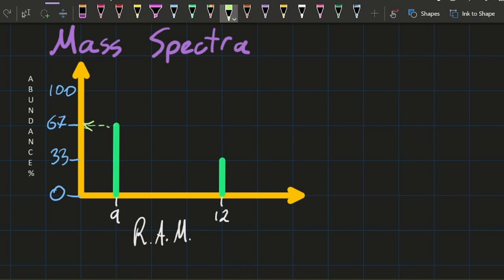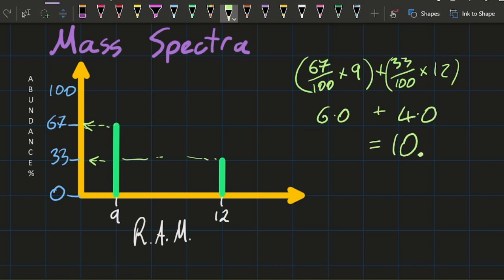So you just saw that two-thirds of them had a mass of 9, 67%, and one-third of them had a mass of 12. Doing the simple SL calculation gives me a relative atomic mass, that is the weighted average, of 10.